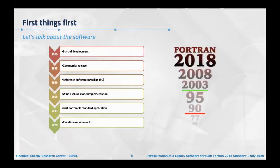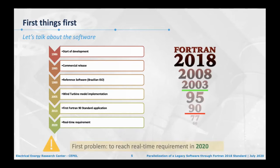The software development started back in 1986. In 1995 we had a commercial release, and several milestones were achieved over time. But today, this year, we are trying to achieve real-time requirements — meaning one second of simulation must be performed in one second in real life. That is the first problem I had to evaluate in choosing the structure to reach real-time requirements this year.